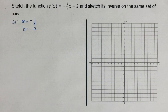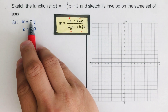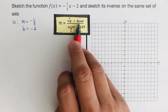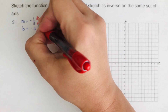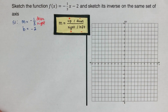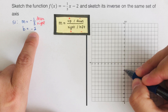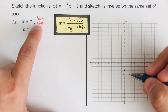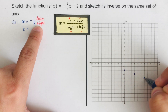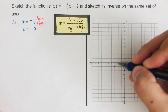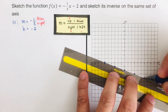Looking at this function, M represents the slope. Since we have negative one over three, the top is negative so we go down, and since the denominator is positive three we go to the right. We start on negative two as the first dot, then go down 1 and right 3, repeating to build the graph.